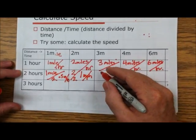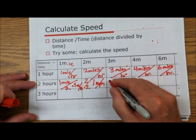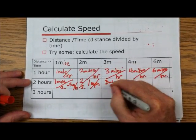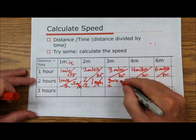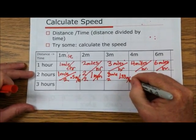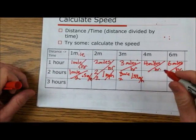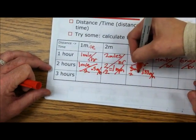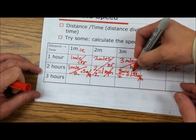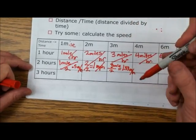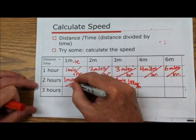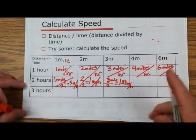This next one is three miles divided by two hours, or three over two. It's 1.33 miles per hour. Three divided by two equals 1.33 — correct, very good. And same thing here: one divided by two is equal to 0.5. Does that make sense? Got it.